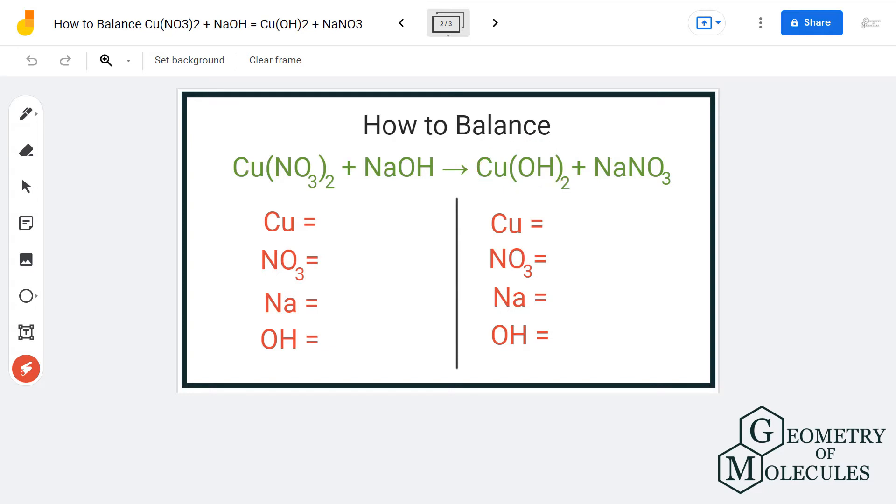We are going to count the number of atoms on both reactant and product sides. Here I'm going to consider NO3 and OH as groups. I'm just going to do that because it will make it very easier for me to count the number of atoms on both sides. So let's start with counting the number of atoms.